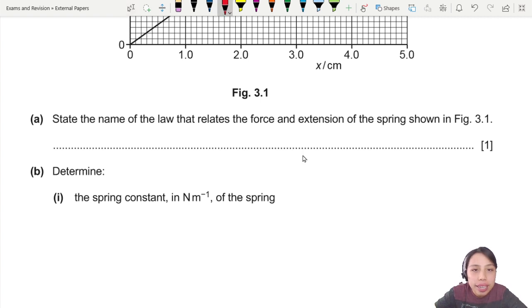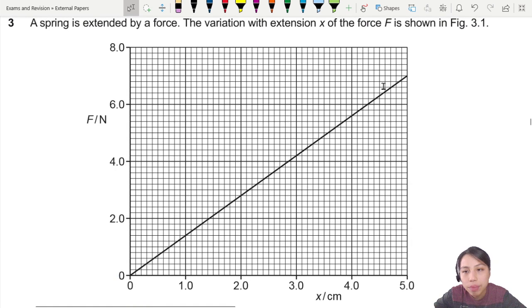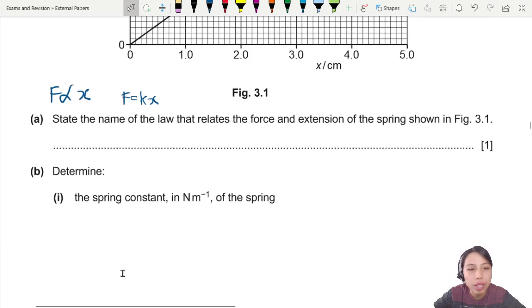Hooke's law. Generally you can say that force is proportional to extension. No intercept, nothing. Just F equals kx. So you should start from origin. Start from origin, very good. Straight line, yes, correct. So that is Hooke's law.